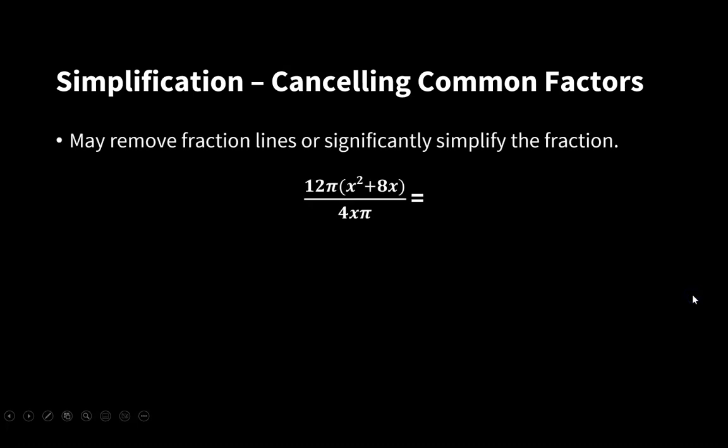Last example of simplification is cancelling common factors. This may remove fraction lines or significantly simplify the fraction. Let's look for example at this rather complicated fraction: 12π(x² + 8x) / 4xπ.